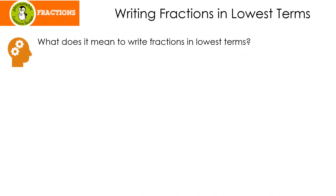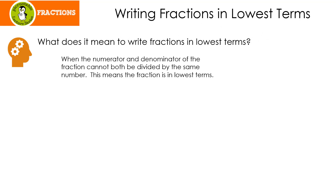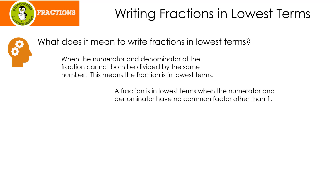What does it mean to write fractions in lowest terms? When the numerator at the top and the denominator at the bottom of the fraction cannot both be divided by the same number, this means the fraction is in lowest terms. A fraction is in lowest terms when the numerator and denominator have no common factor other than 1.